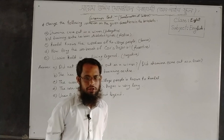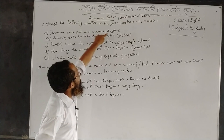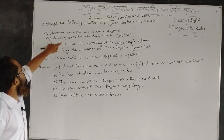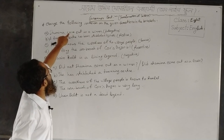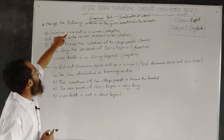The first sentence is: Shamima came out as a winner. You have to transform this sentence as an interrogative one. You can see Shamima as the subject; 'came' is the first form of the verb 'come', so it is a sentence of past indefinite tense. You have to take 'did' as an auxiliary verb because you have the first form of the principal verb.